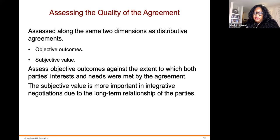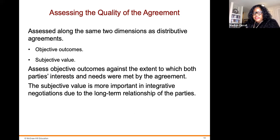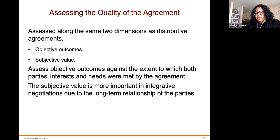When assessing the quality of agreements, you always want to assess along the same two dimensions as distributive agreements: objective outcomes and subjective values. Assess objective outcomes against the extent to which both parties' interests and needs were met by the agreement. Subjective value is more important in integrative negotiations due to the long-term relationships of the parties.